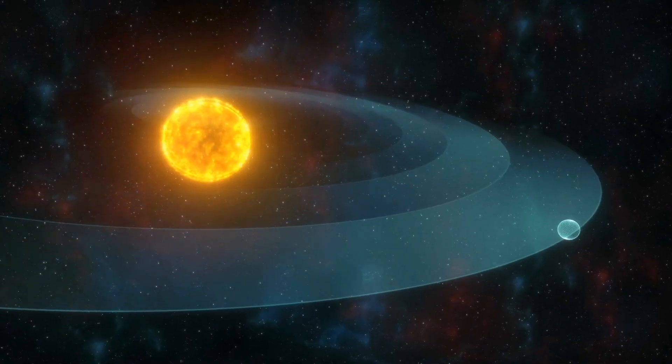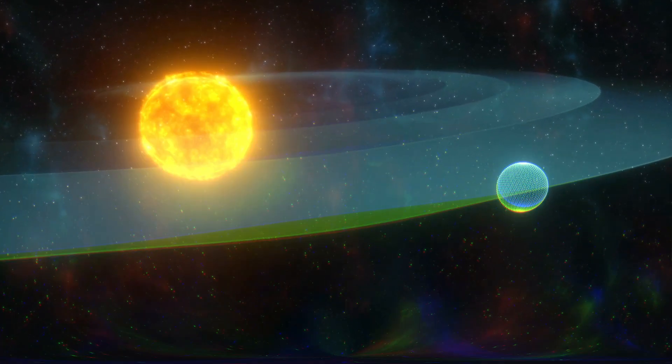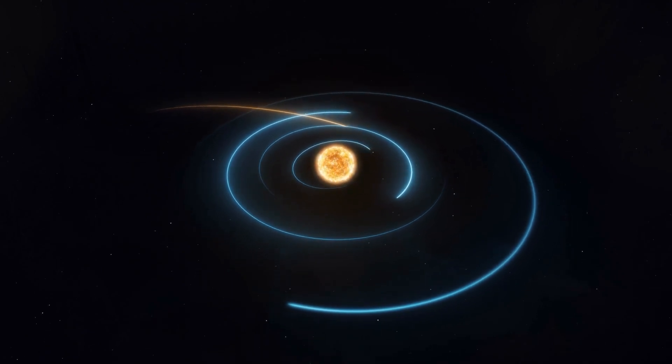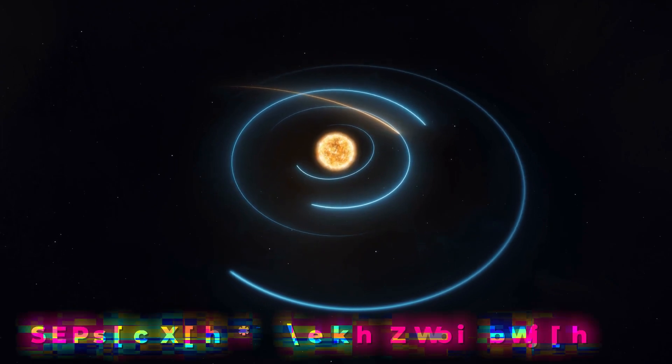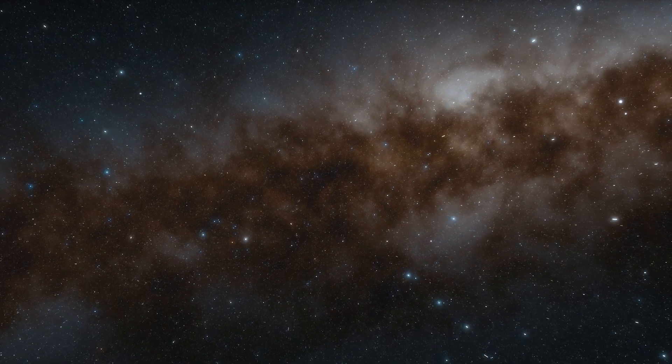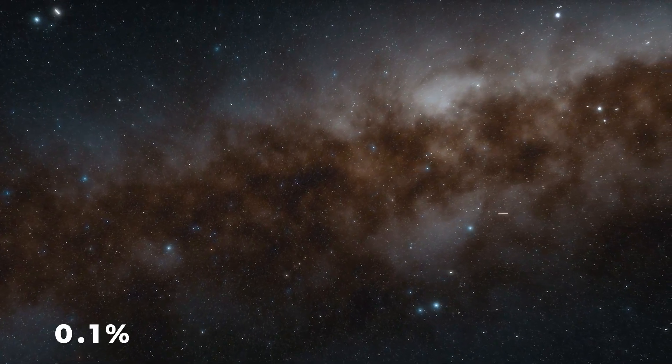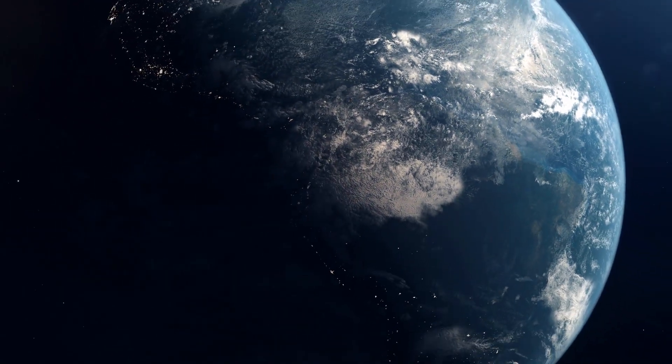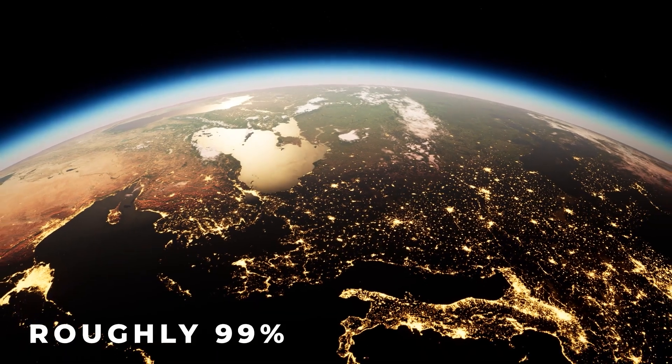LHS 475b is a planet that orbits its host star, a red dwarf, every two days. The team watched LHS 475b as it passed twice in front of the star. The first transit took place on August 31st of 2022, and the second one took place on September 4th, four days later. During the planet's 40-minute transits, 0.1% of the star's light was obscured. The researchers used the information to determine that the planet is around the same size as Earth, with only roughly 99% of its diameter.